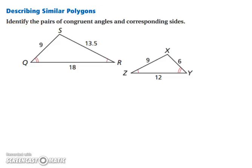Let's try identifying pairs of congruent angles and corresponding sides. Let's start with congruent angles. We have angle R is congruent to angle Z, angle Q is congruent to angle Y, and using the third angles theorem, we have angle S is congruent to angle X.